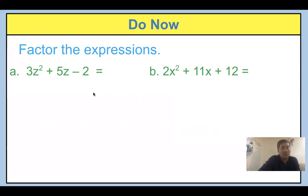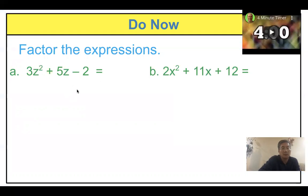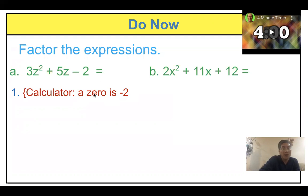So three G squared plus five G minus two equal to zero — what should you do first? You put it into the calculator, right? You put the function in the calculator and look at the table. If you look at the table, your calculator will give you x equal to negative two for y equal to zero. Be careful — it's not x zero, it's y equal to zero. So your value x equals negative two.